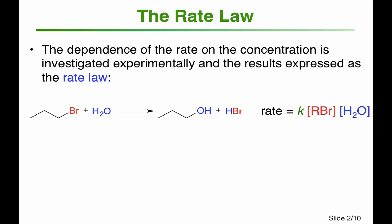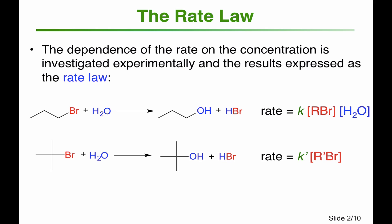In a reaction of an alkyl bromide with water, the rate is found to be proportional to the concentration of the alkyl bromide and to the water. But in a very similar looking reaction, the rate is found to be proportional only to the concentration of the alkyl bromide — the concentration of water doesn't matter. This tells us the two reactions go through different mechanisms: the first is an SN2 and the second is an SN1 reaction.